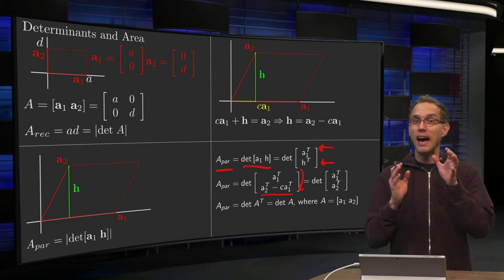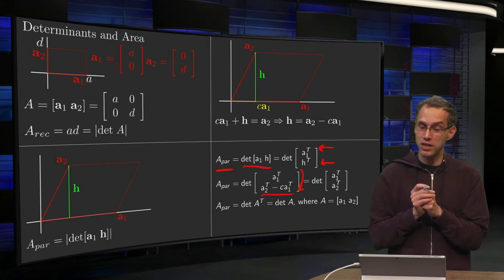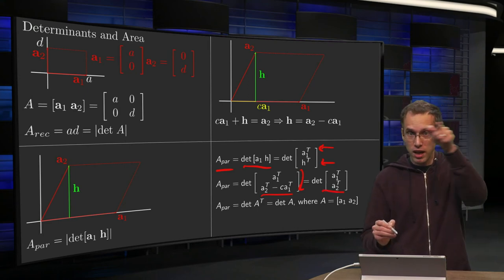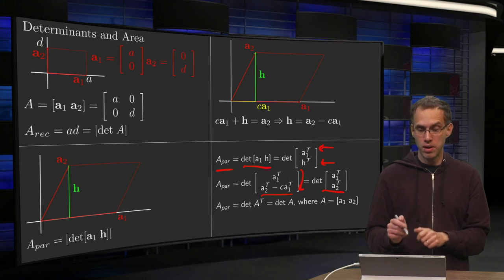And that's really nice because then this part, minus c times a₁, is going to cancel out. So then we are left with the matrix which contains a₁ as first row and a₂ as second row.